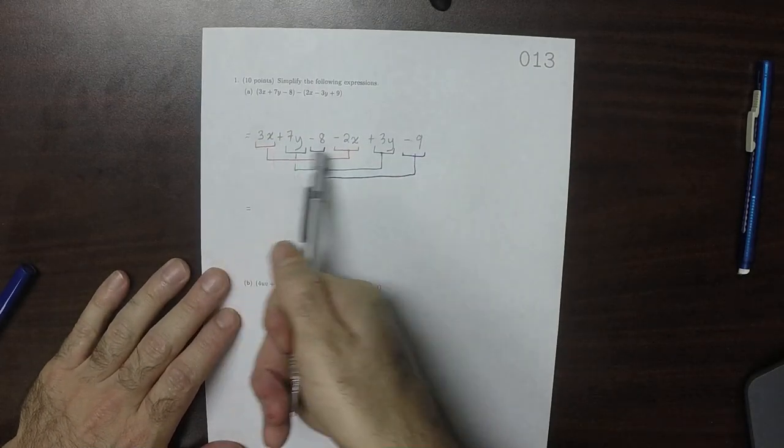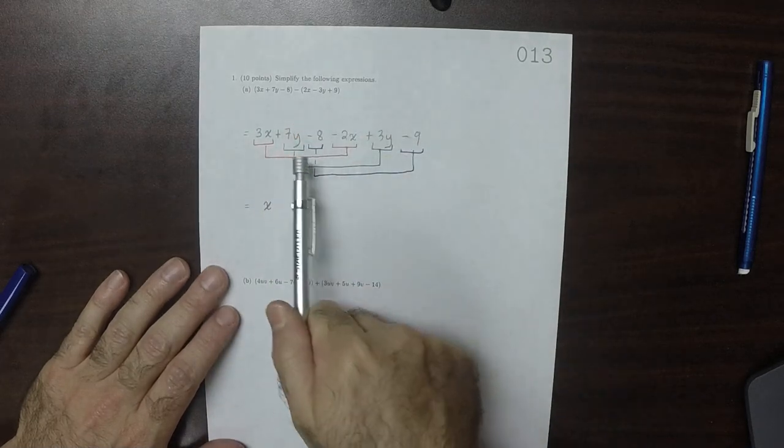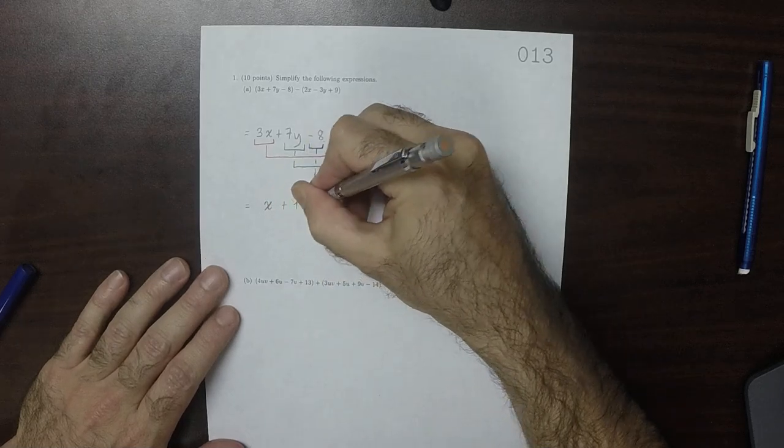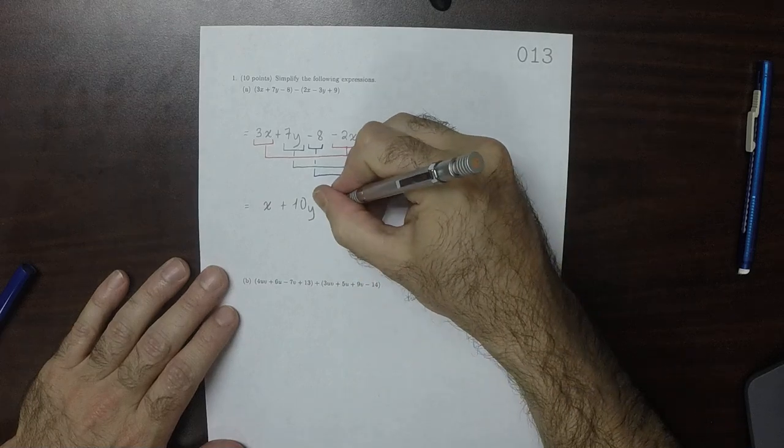So 3x minus 2x is 1x, 7y plus 3y is 10y, and the negative 8 minus 9 is negative 17.